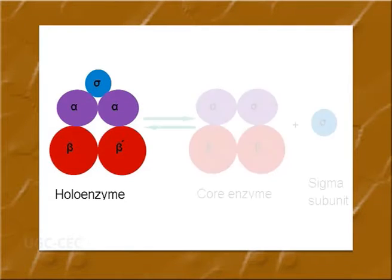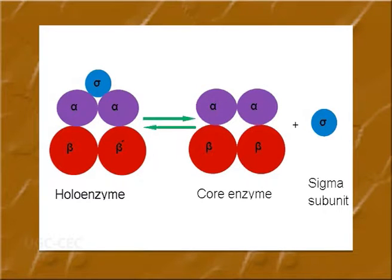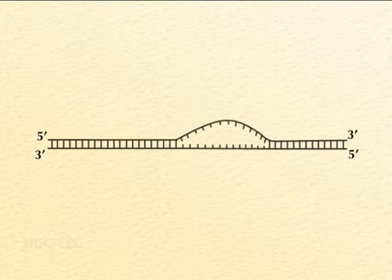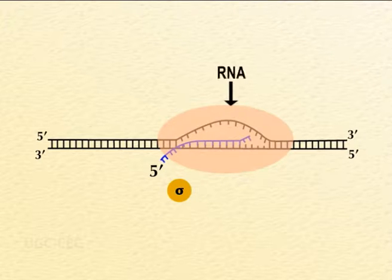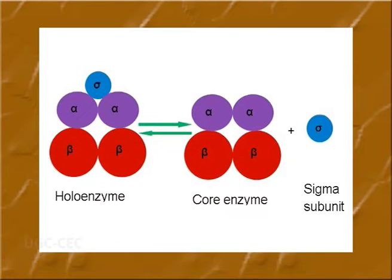The attachment of the sigma factor is not very firm, so the core enzyme can be easily isolated. Once RNA synthesis is initiated, sigma dissociates after the RNA is eight to nine bases long, and then the core enzyme brings about elongation of mRNA. The dissociated sigma factor may again combine with the core enzyme to form the RNA polymerase holoenzyme.